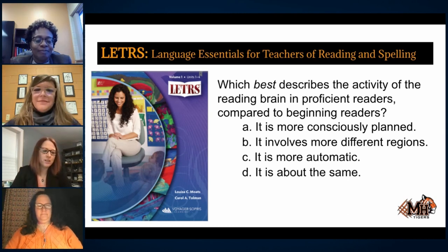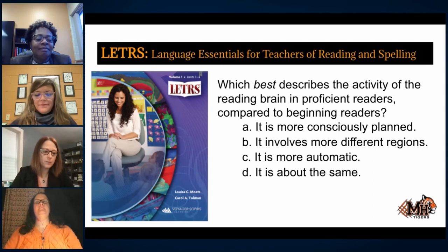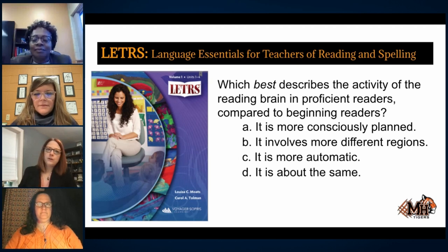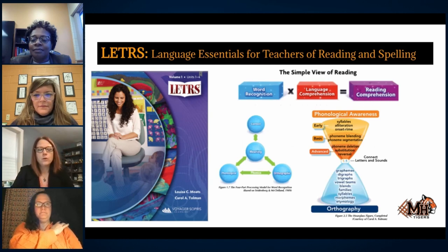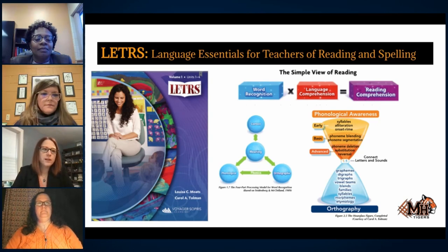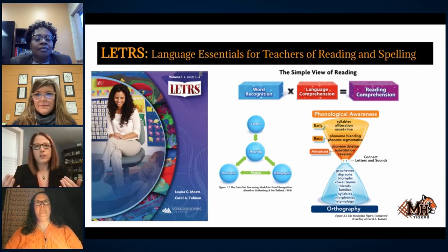The answer is C — more automatic, which stands for automaticity. Automaticity means the ability to read quickly and accurately without conscious effort. That's just an example of one of the questions that we had to answer as we moved through this Language Essentials for Teachers of Reading and Spelling course. The concept is that word recognition is a multiplication problem — you have to have word recognition multiplied with language comprehension in order to get reading comprehension, and that all stems from the brain.